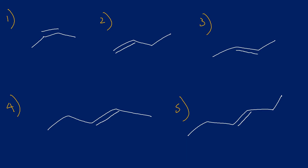Number one: the carbon on the left has a H and a CH3; the carbon on the right has a H and a CH3. So this would be a symmetric alkene.